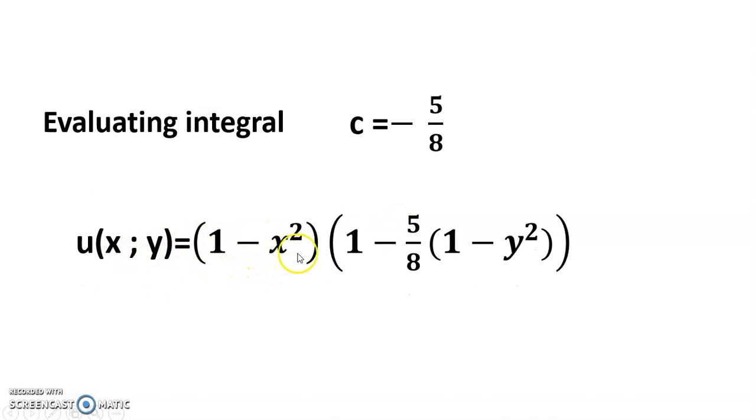And u(x,y) = (1-x²)(1 - 5/8(1-y²)). Putting the value of c = -5/8, this is my solution friends. I hope it is clear for everyone. Please write down everything. Hope it is helpful for your study.